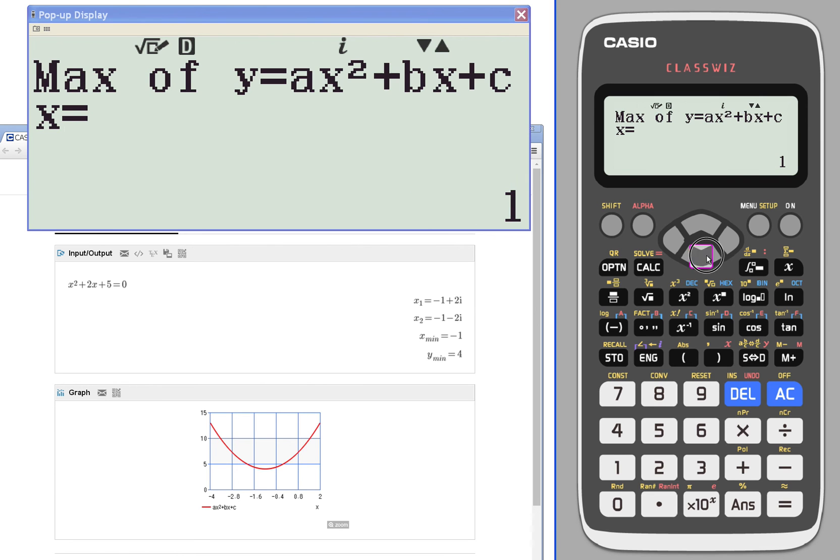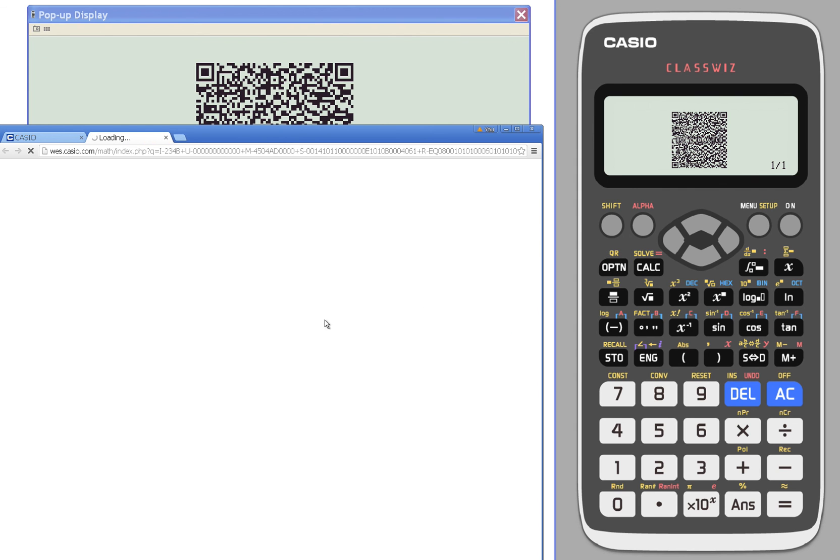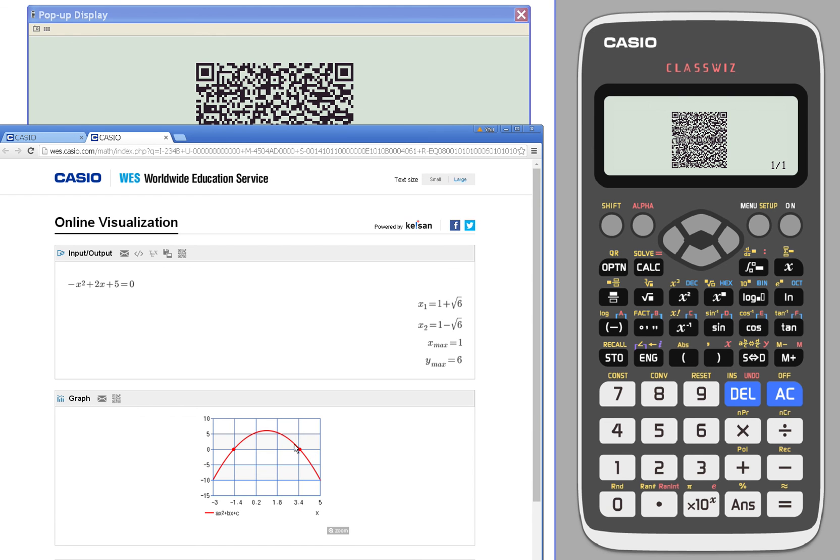It's at 1, 6, and we will generate again the QR code for that. The QR code will give us the graphical representation of that same information, including the zeros.